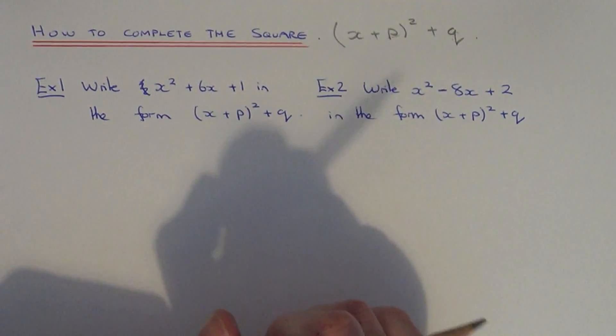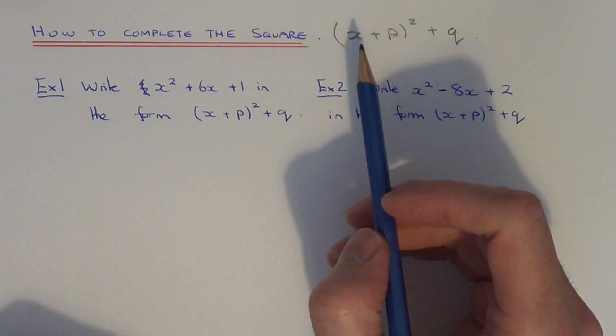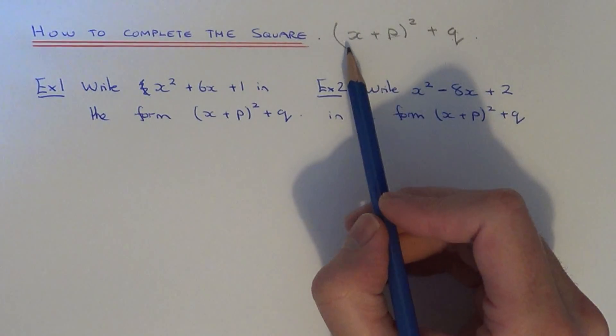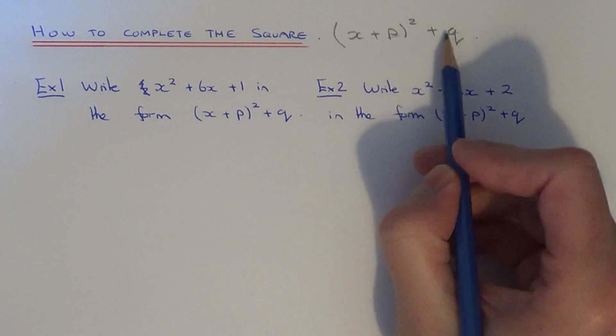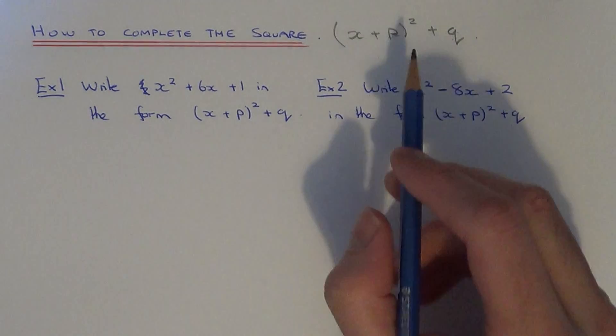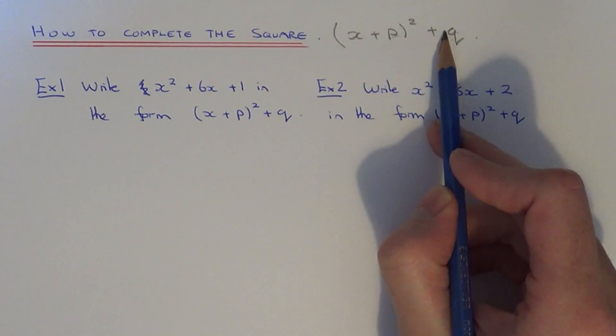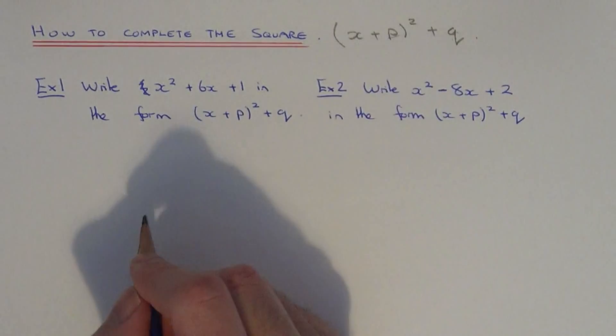Today I'm going to show you a couple of examples on how to complete the square. This means you need to write the quadratic expression in the form x plus p squared plus q, where p and q are two numbers to be found. Sometimes they might use different letters in the exam for p and q, so they could use a or b, so watch out for that.